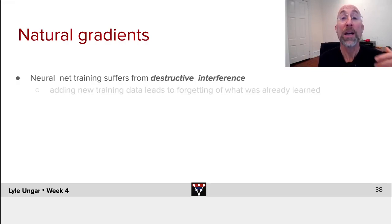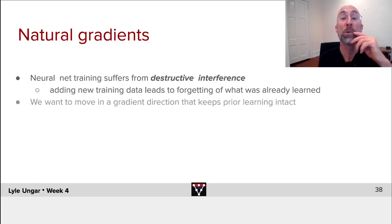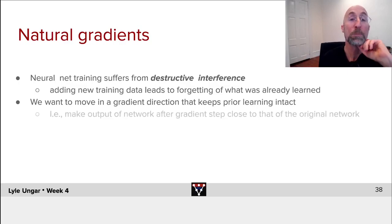Natural gradients tries to address this problem that adding new training data leads you to forget what you've learned before. So the idea of natural gradients is to move in a gradient direction that tries to keep the neural net from changing. Keep it to still do what it did before in addition to doing what it's done before.